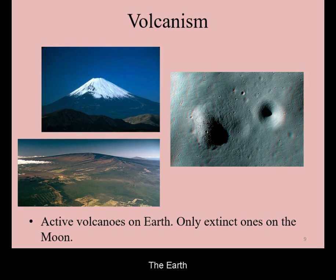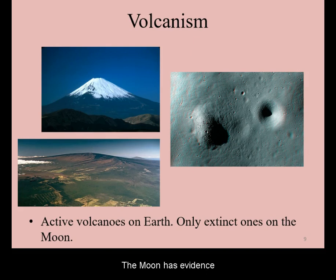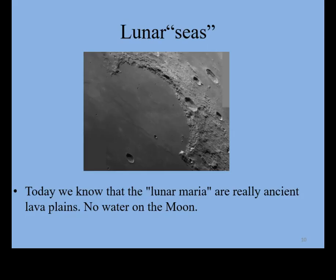The Earth has active volcanism. The Moon has evidence of past volcanism, especially the giant smooth lava plains known as the Lunar Maria.